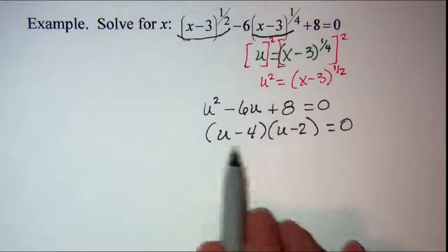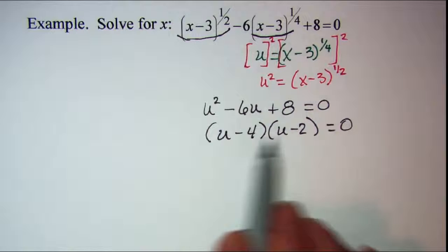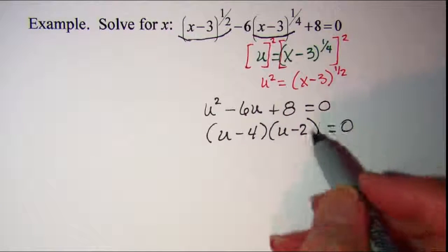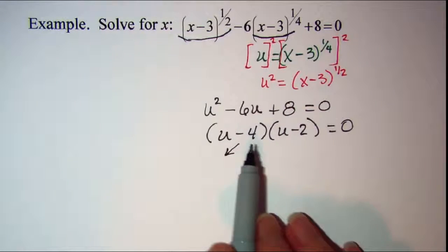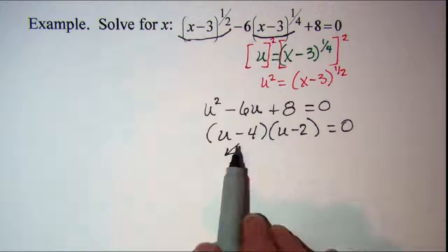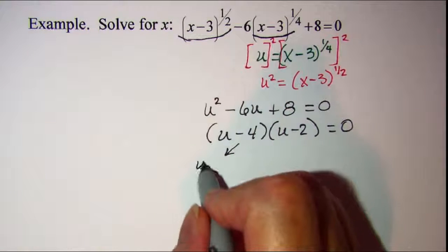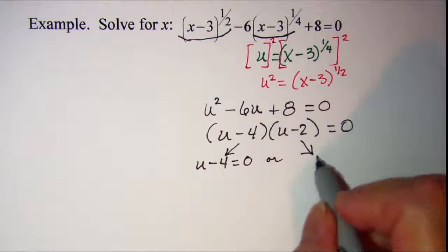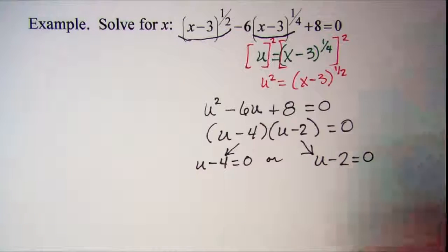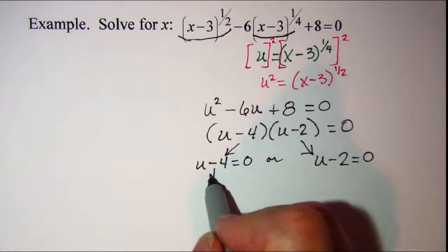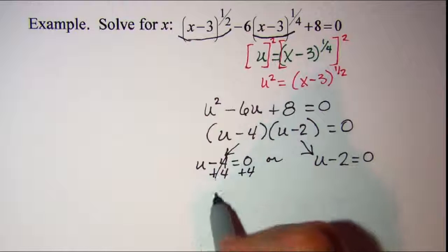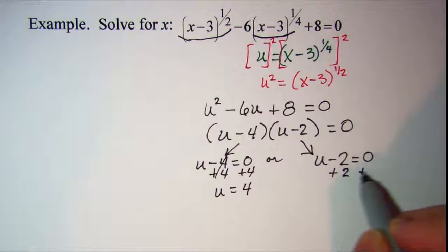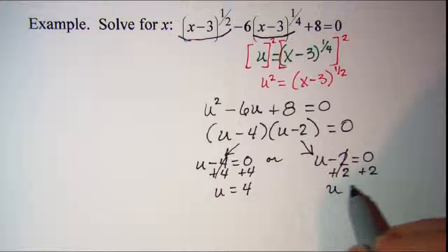So that is how that factors. And I can use the zero factor property to solve this and you have two factors and their product is zero. We can set this one equal to zero or this one equal to zero. And we'll solve each of these. Let's add four to both sides here and u equals four. And let's add two to both sides here and u equals two.